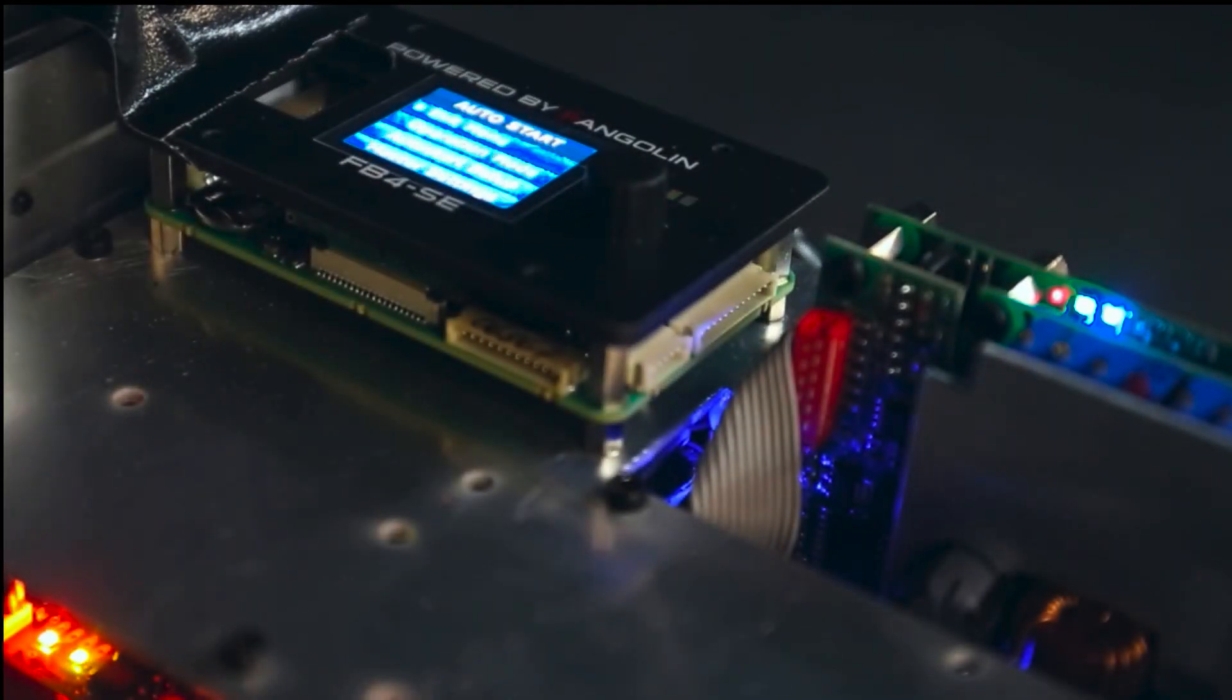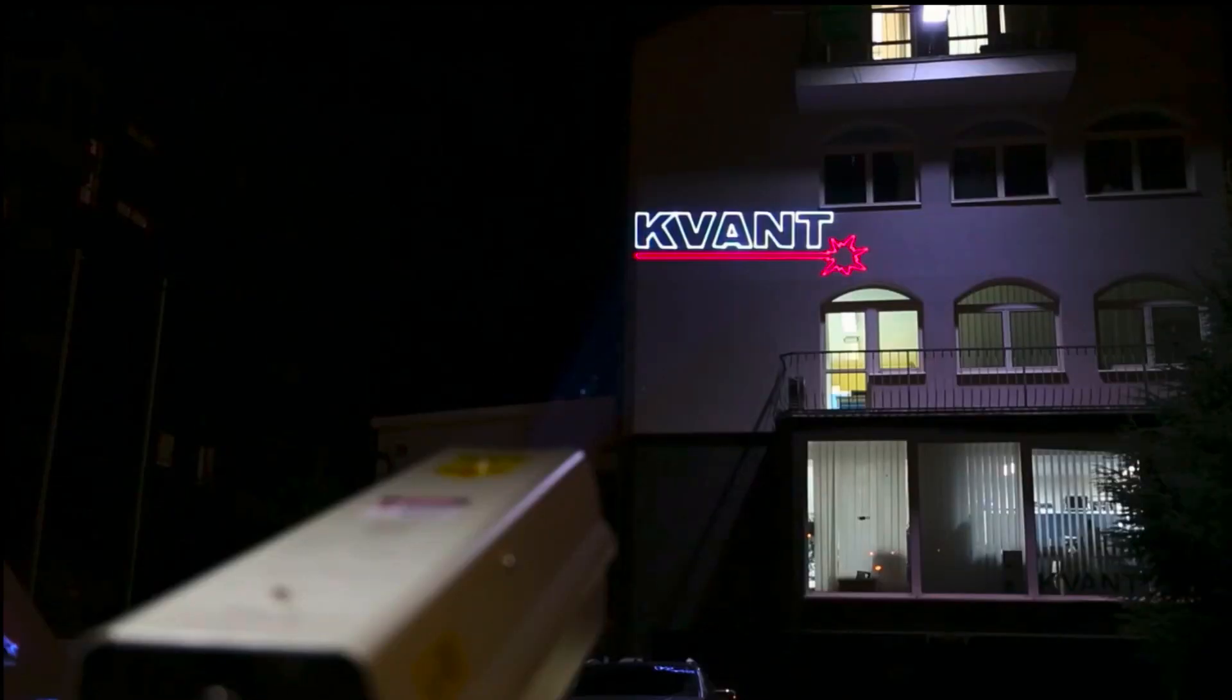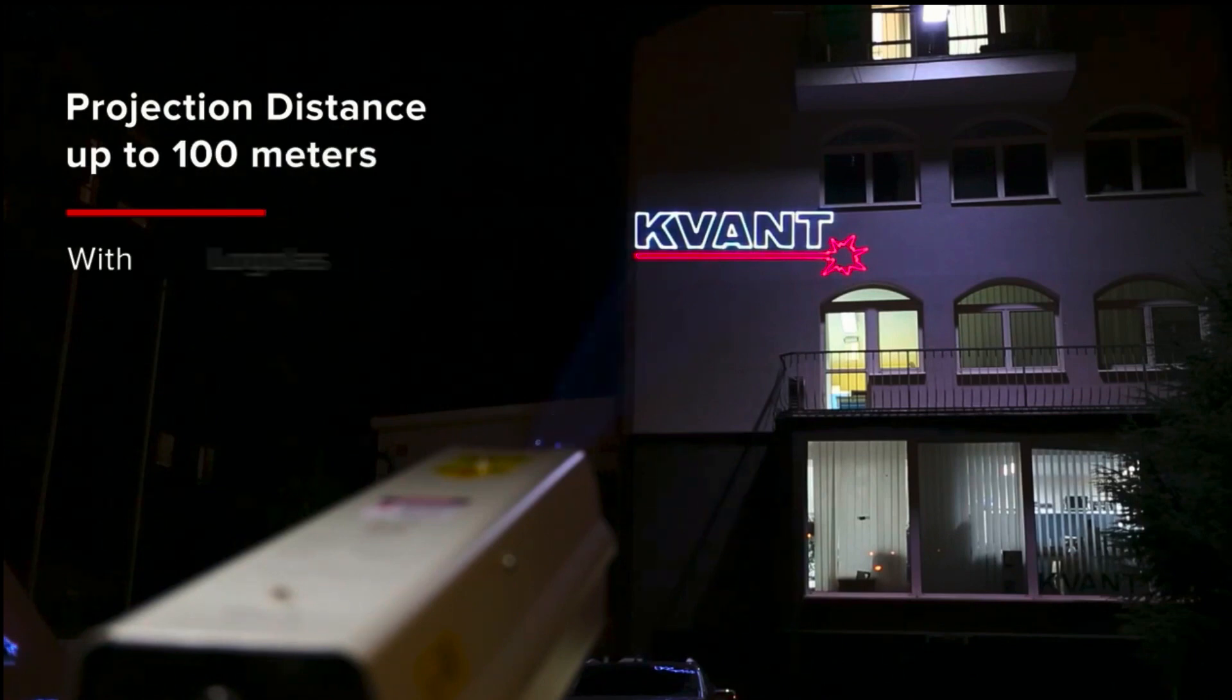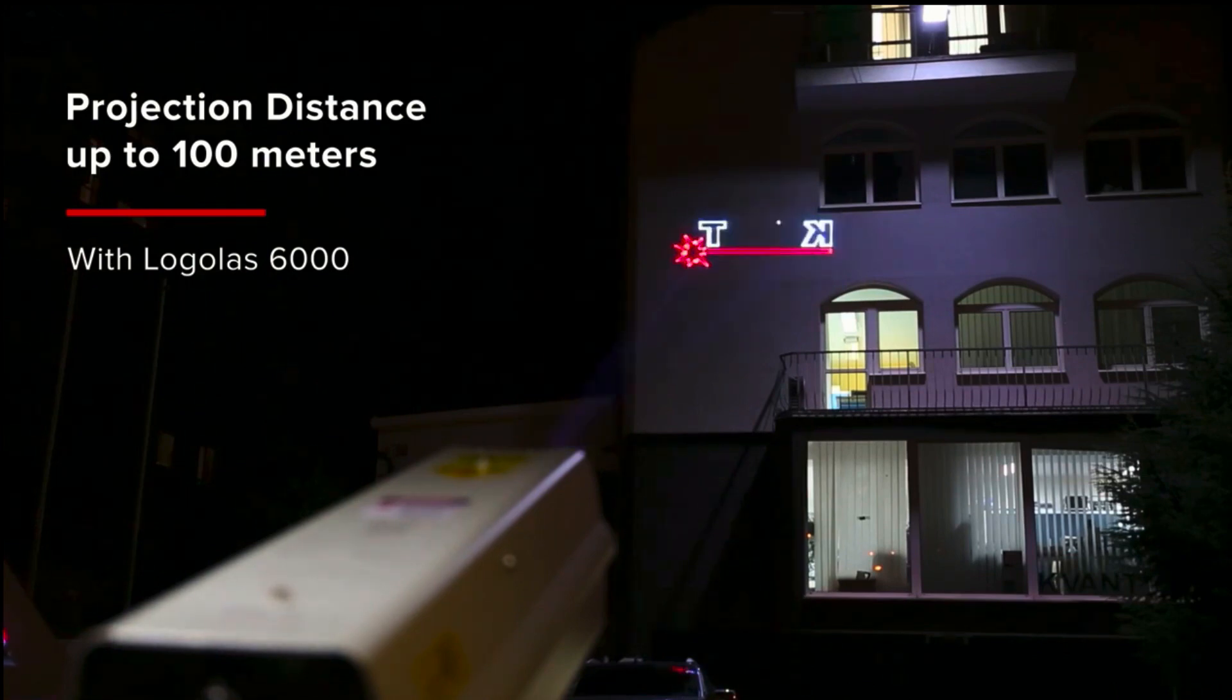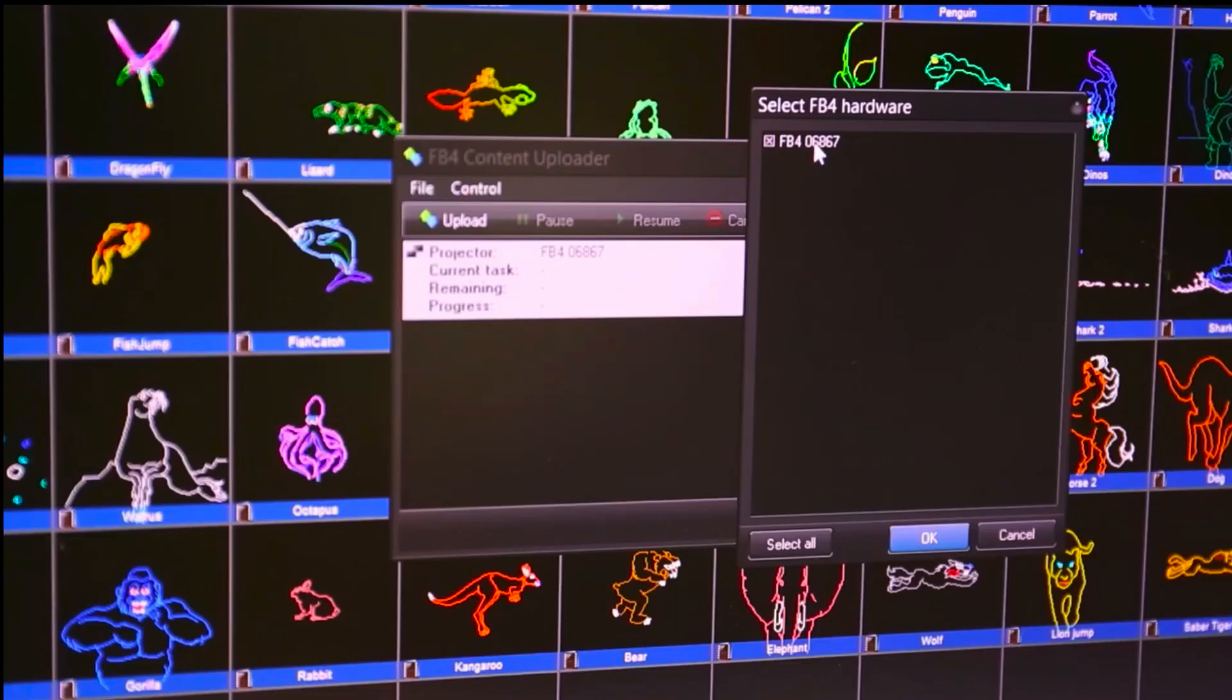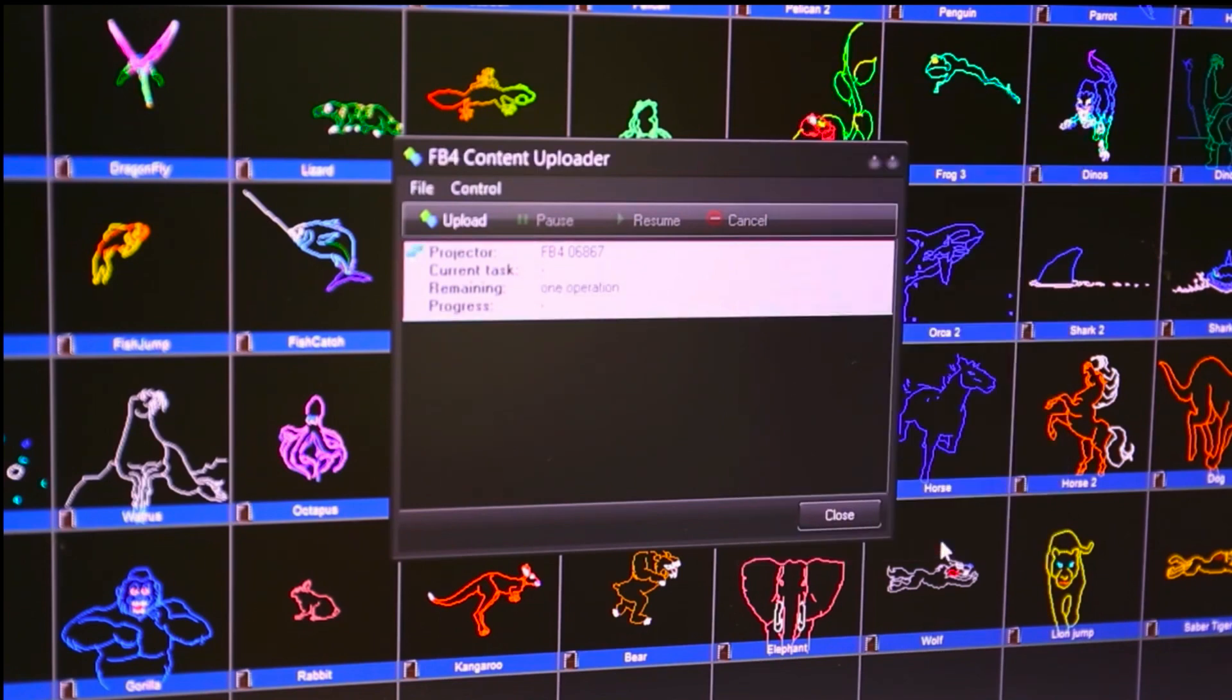The laser is built in a weatherproof housing and controlled by an integrated FP4 control interface. The main features of Logolas: long projection throw of up to 100 meters with Logolas 6000. The content you want to display is uploaded to the laser's internal memory via ethernet.